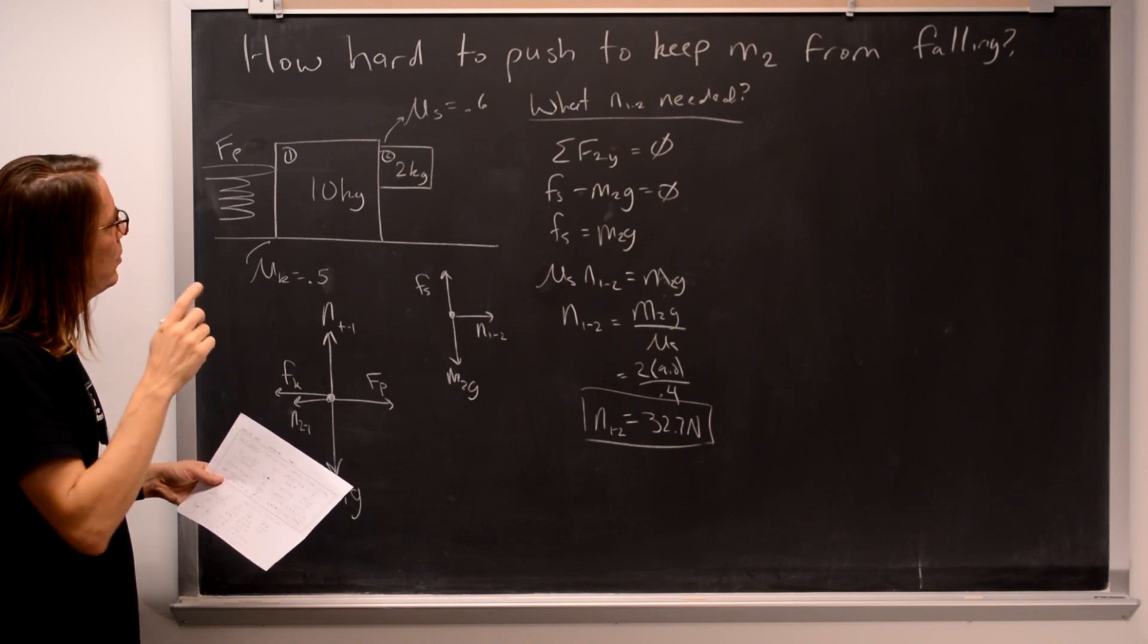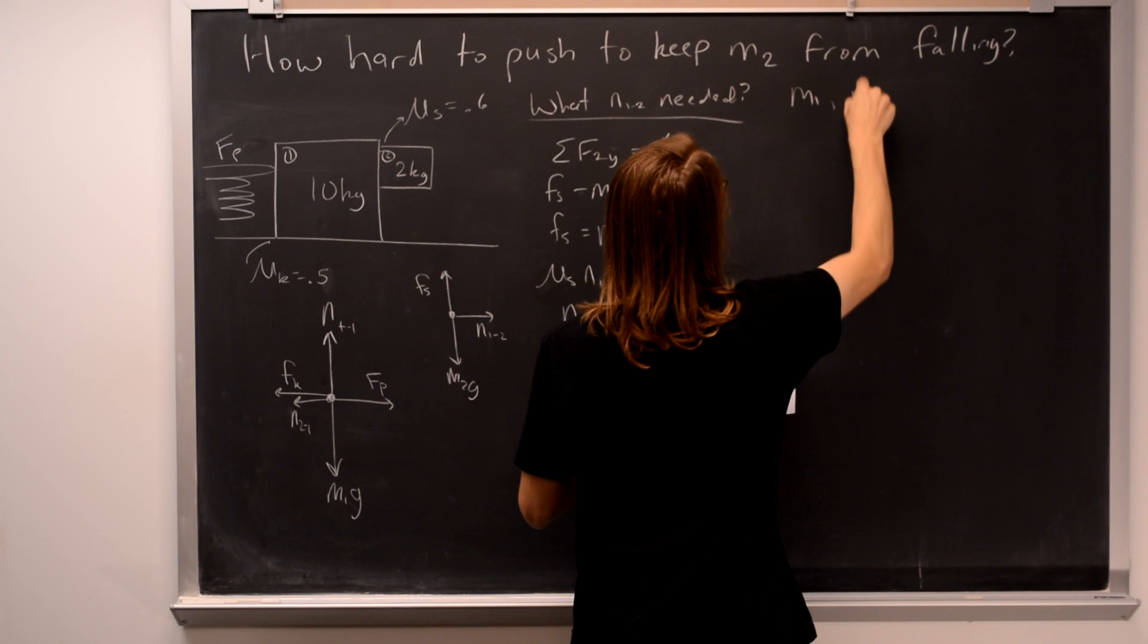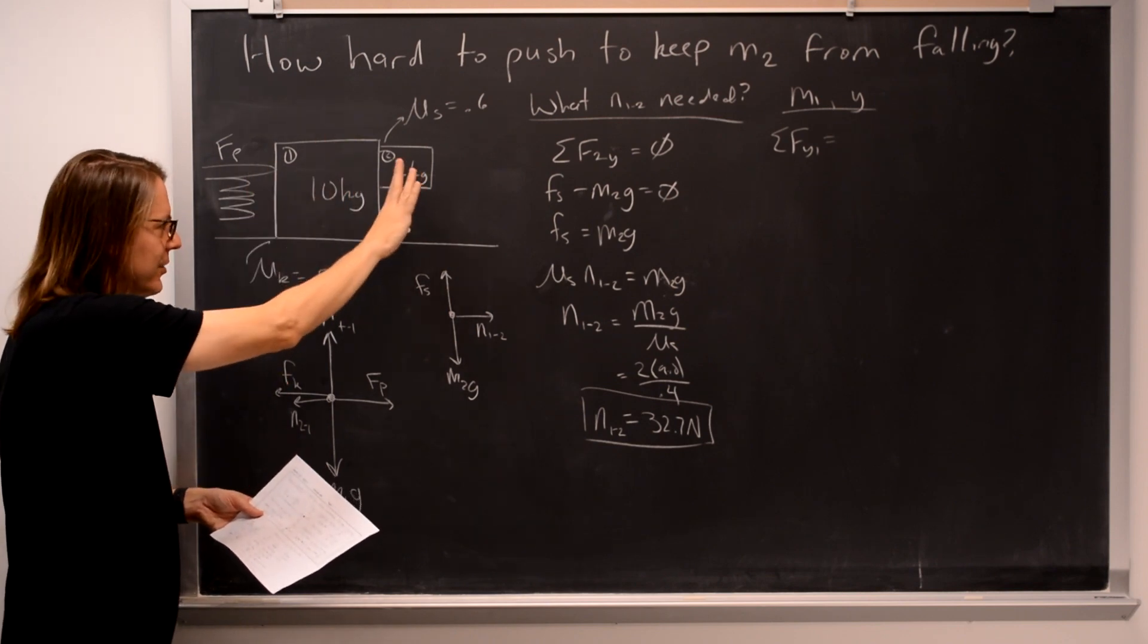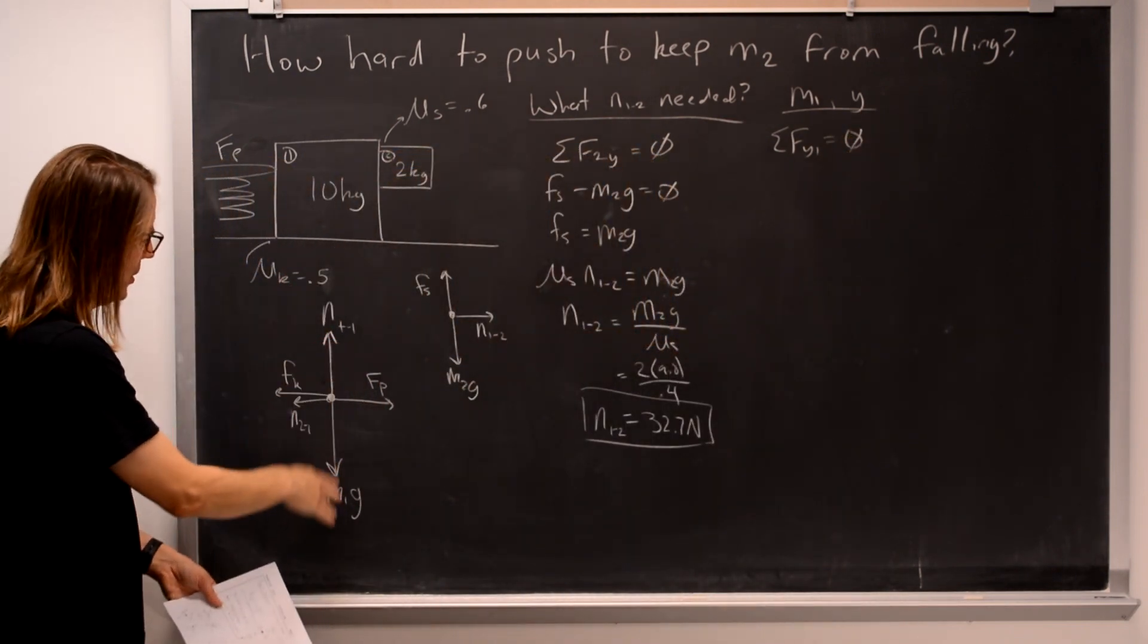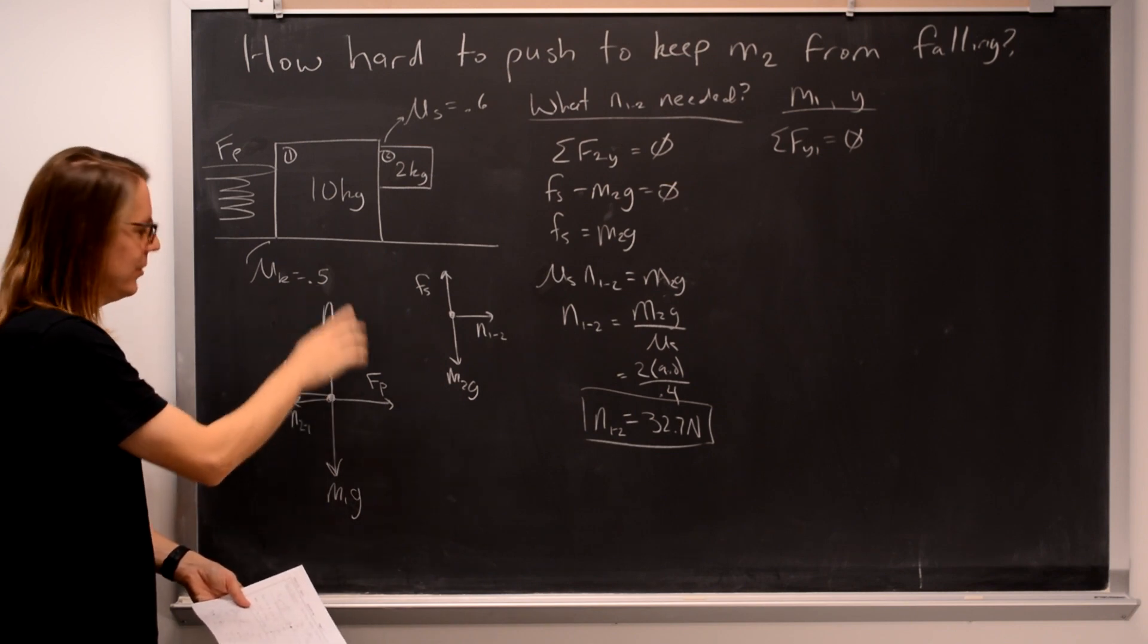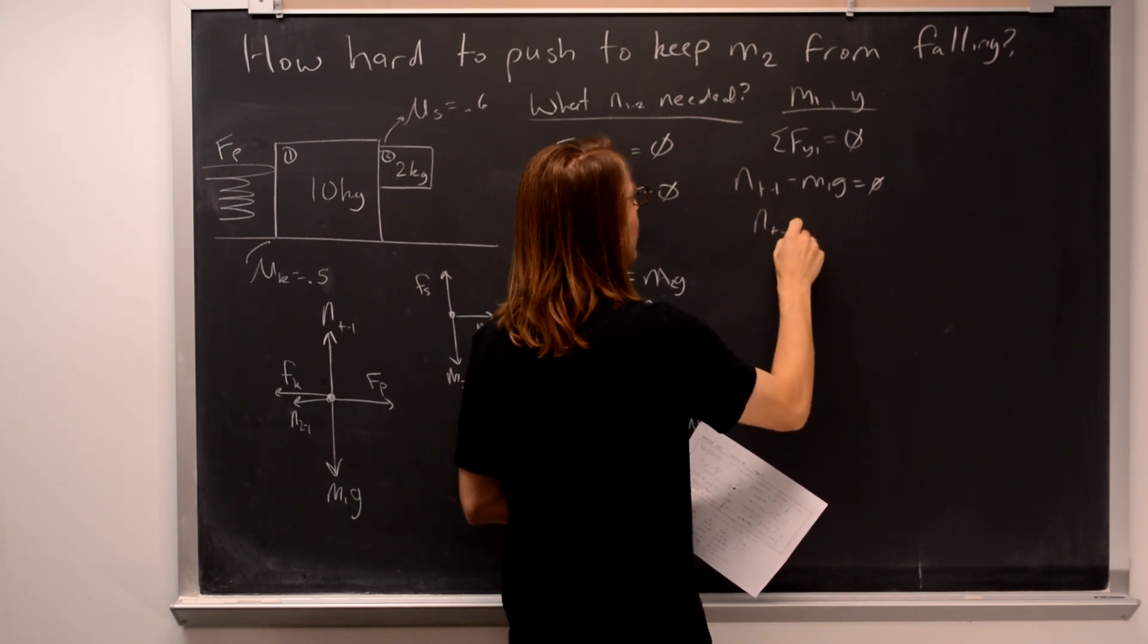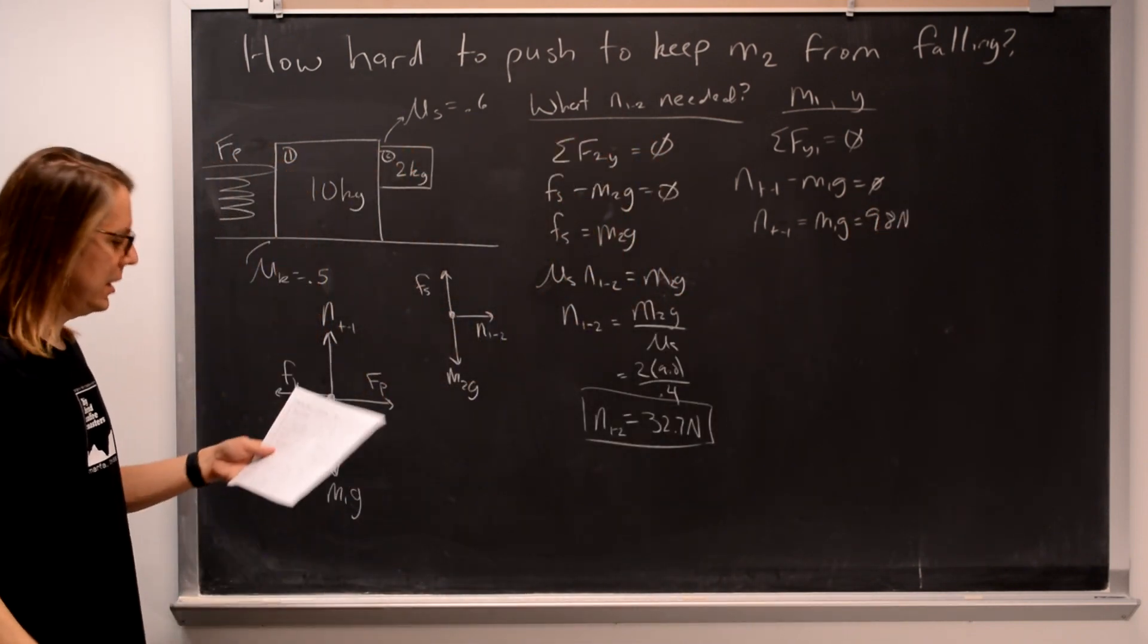So let's say the sum of the forces, now we're going to say mass 1 in the y direction. Let's say the sum of the forces in the y on 1 equals what? Pushing it in the x, it's moving in the x. It's not accelerating or moving in the y, so it's equal to 0. We're doing this to get the normal force that the table applies to 1, so we can get the kinetic friction. So we can see how much force we have coming back. Normal force table on 1 up minus M1g down. You quickly see that the normal force of the table applying to mass 1 is M1g, which is 98 newtons.